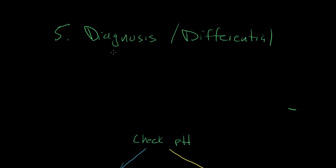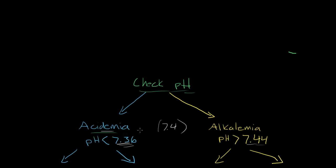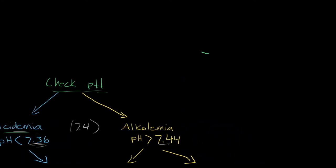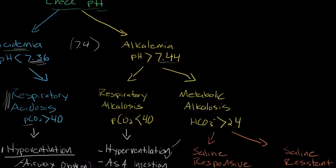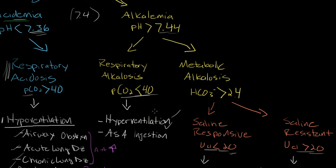Once you've finished step 4 and determined if you're having appropriate compensation and whether you have a single or mixed picture of acid-base disorders, you determine your diagnosis or differential. First, check the pH from your ABG. If the value is less than 7.36, you diagnose acidemia; if it's greater than 7.44, you're having an alkalosis picture. Alkalemias can be broken up into respiratory or metabolic alkalosis. A respiratory alkalosis is identified with a PCO2 less than 40, which makes sense because you're essentially hyperventilating and blowing off CO2. A common cause of respiratory alkalosis is aspirin ingestion — an aspirin level will help identify and diagnose that.